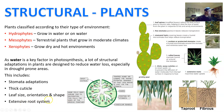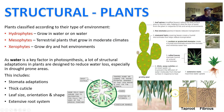Plants also have an extensive root system to actually gather water. A lot of plants have what we call a tap root, where they grow vertically until they hit water and then start to branch out. Tap roots are better suited for deep groundwater access, compared to fibrous roots.